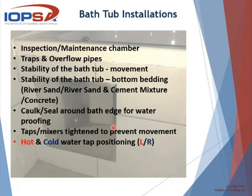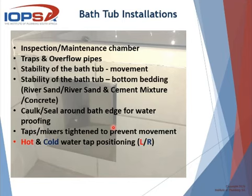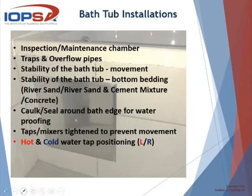The next point is the caulking or sealing around the edge of the bath for waterproofing and splashback. Also, taps and mixers need to be tightened properly — specifically pillar taps. Most of us have come across a basin or bath where that was not tightened properly and it's quite irritating when you try to open them. We'll also touch on the positioning of hot and cold water later when we address the SANS codes.